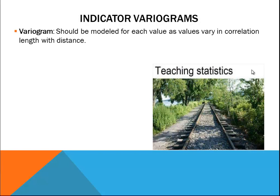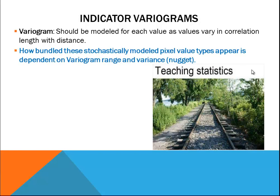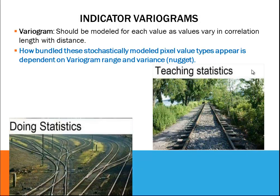An indicator variogram can be displayed on a plot of y-axis representing variance versus x-axis representing separation distance class. These are seen as binary 0 or 1 values indicating value of your interest. A variogram may then be computed from these binary data.